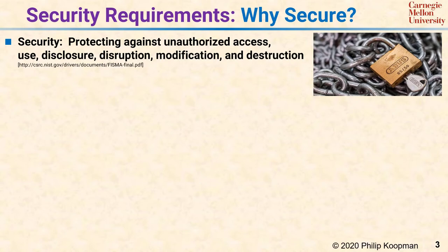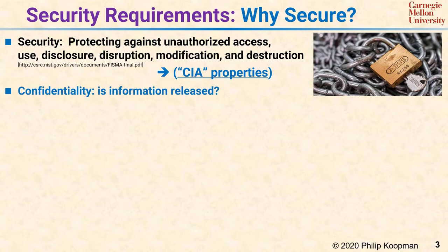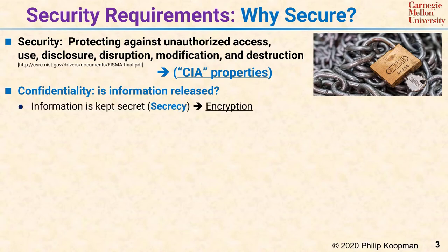Generally, security is characterized according to the so-called CIA properties, which stands for confidentiality, integrity, and availability. Confidentiality has to do with ensuring information is released only when it is supposed to be. The most well-known aspect of confidentiality is secrecy, which means that only authorized parties can see particular information. Secrecy is usually implemented using encryption.